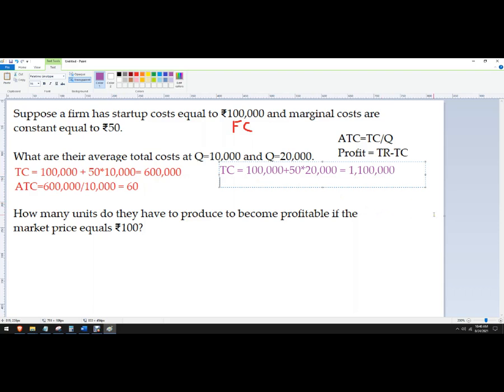And then for the average total cost, we'll take the 1.1 million rupees, divide that by 20,000. And if I'm doing that by hand...